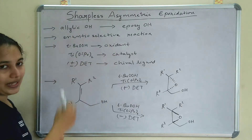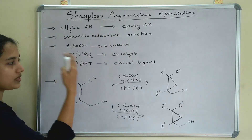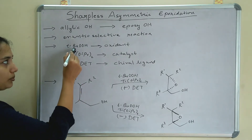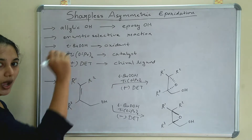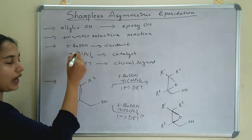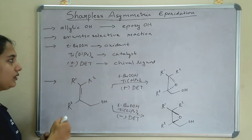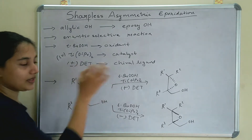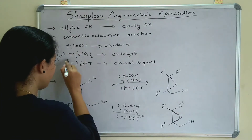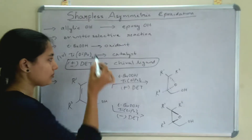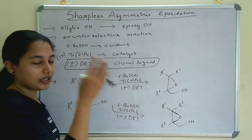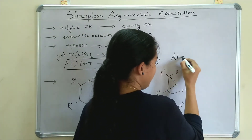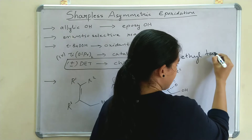These are the reagents used in Sharpless asymmetric epoxidation — you have to study these agents. The oxidant is tertiary butyl hydroperoxide (TBHP). Titanium isopropoxide is the catalyst; titanium is in oxidation state +4. The chiral ligand is DET — diethyl tartrate. This is the most important reagent in Sharpless asymmetric epoxidation.